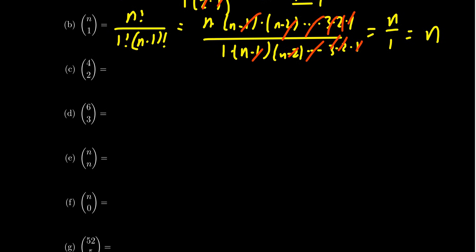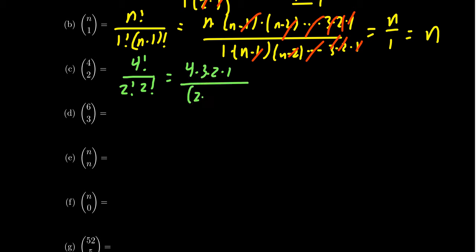If we do 4 choose 2, this looks like 4 factorial over 2 factorial times 2 factorial — note that 2 plus 2 equals 4, so the numbers on the bottom add up to the number on top. 4 factorial is 4 times 3 times 2 times 1, and 2 factorial is 2 times 1, and we get it twice. The 2 factorials cancel, and 2 goes into 4 twice, giving us 2 times 3, which equals 6.